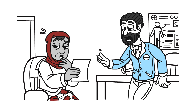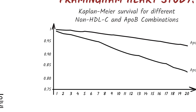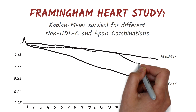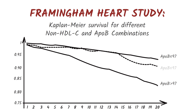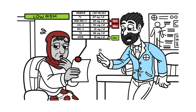Finally, let's look at a 50-year-old woman who comes to your clinic. Her non-HDL-C is at the 75th percentile and her LDL-C is at the 80th percentile. But once you measure her ApoB, you find that she's only at the 51st percentile. The same Framingham Heart Study found that patients with lower ApoB levels have better survival rates, regardless of whether non-HDL-C or LDL-C levels are high or low. And so you conclude that your patient is not at high risk of cardiovascular disease after all.